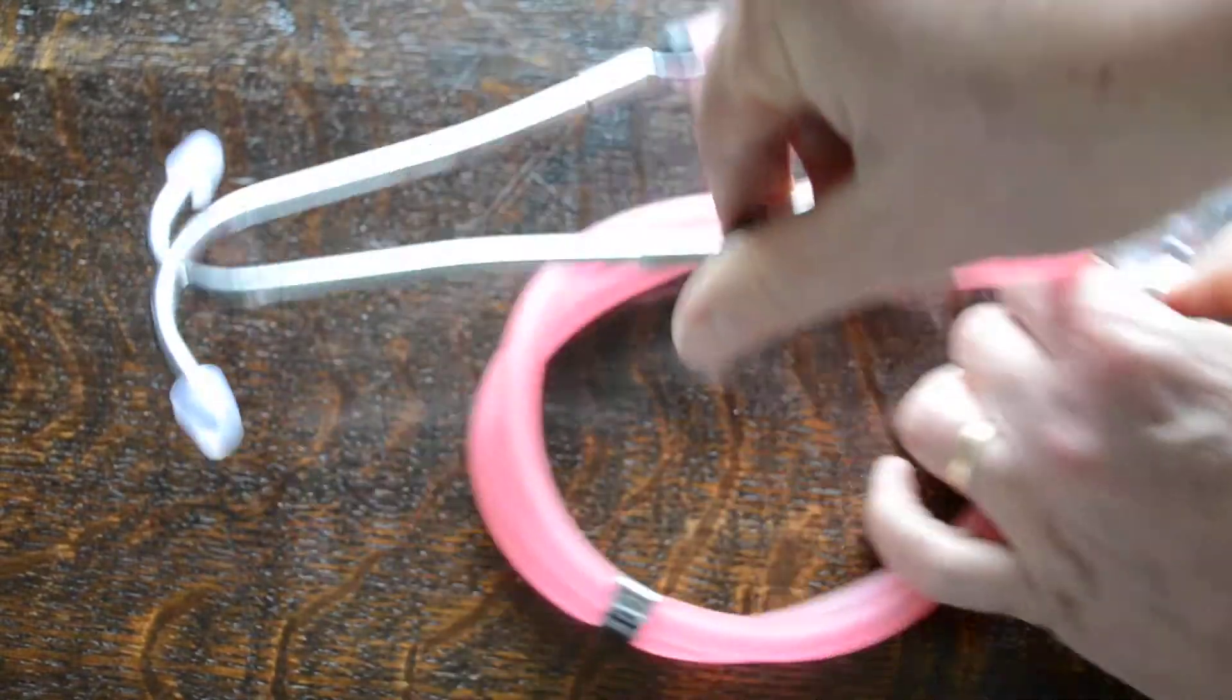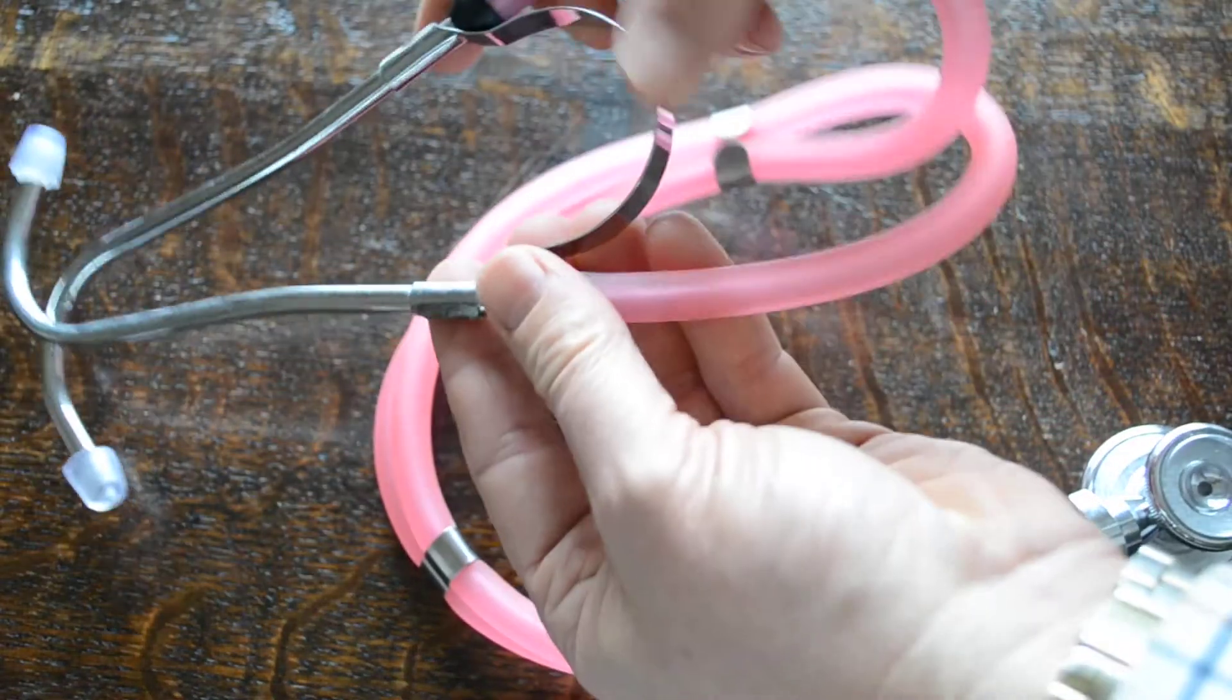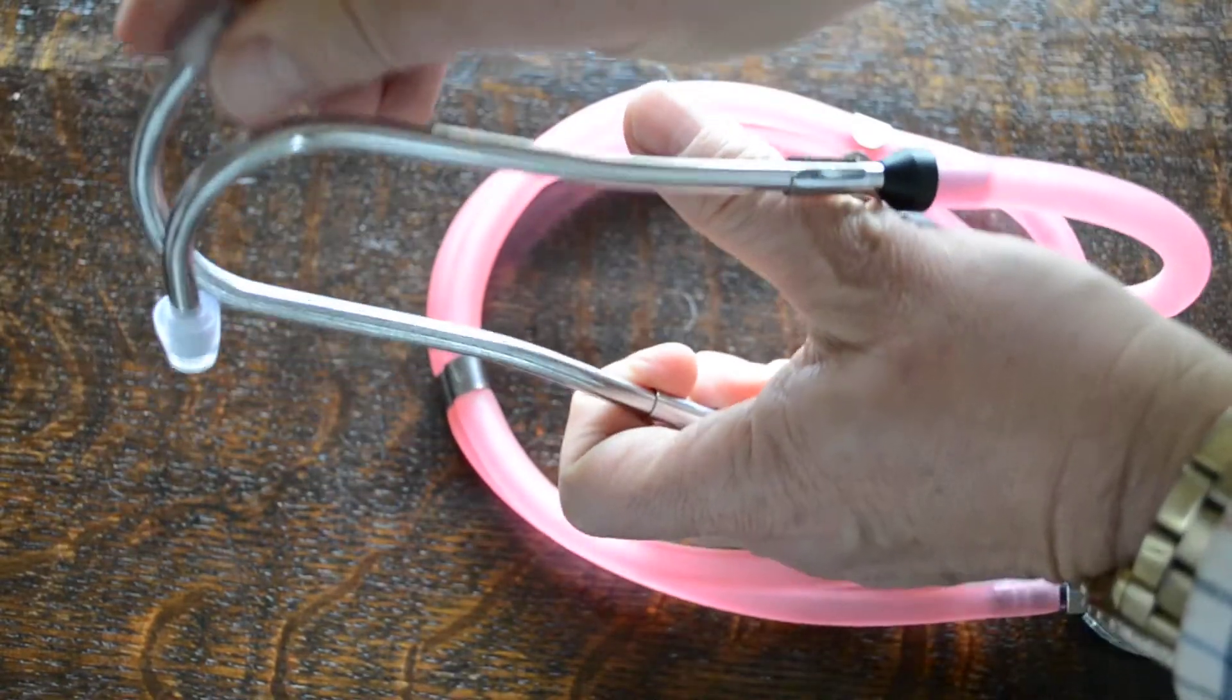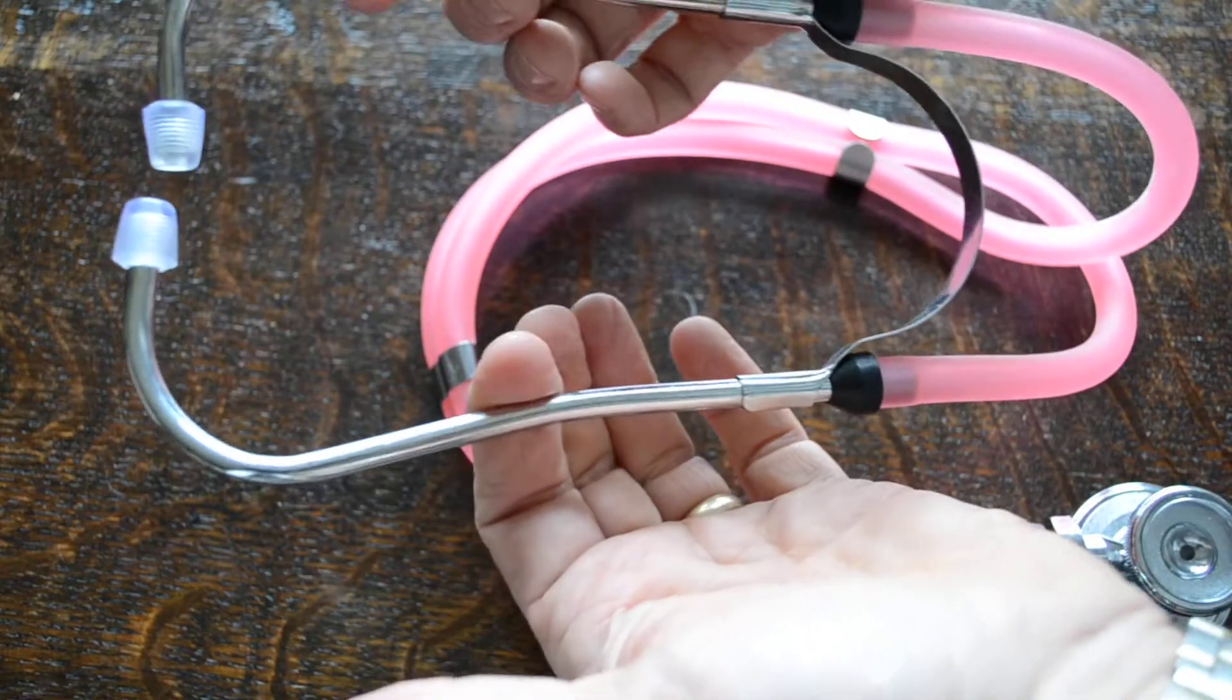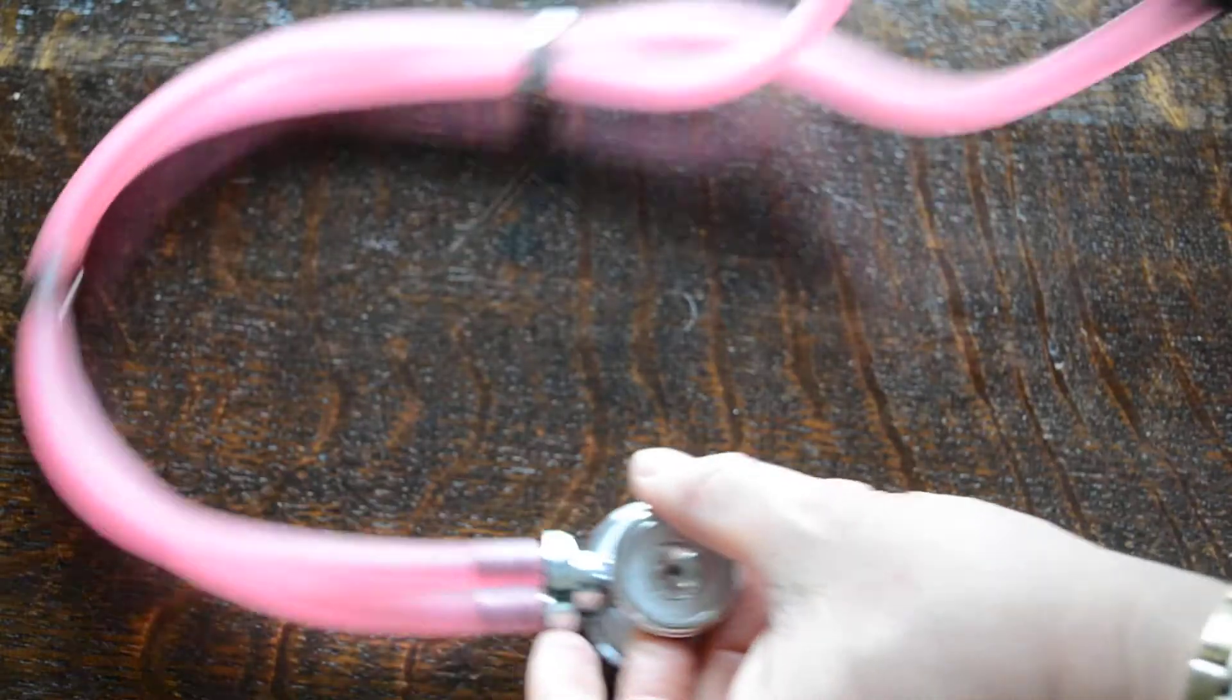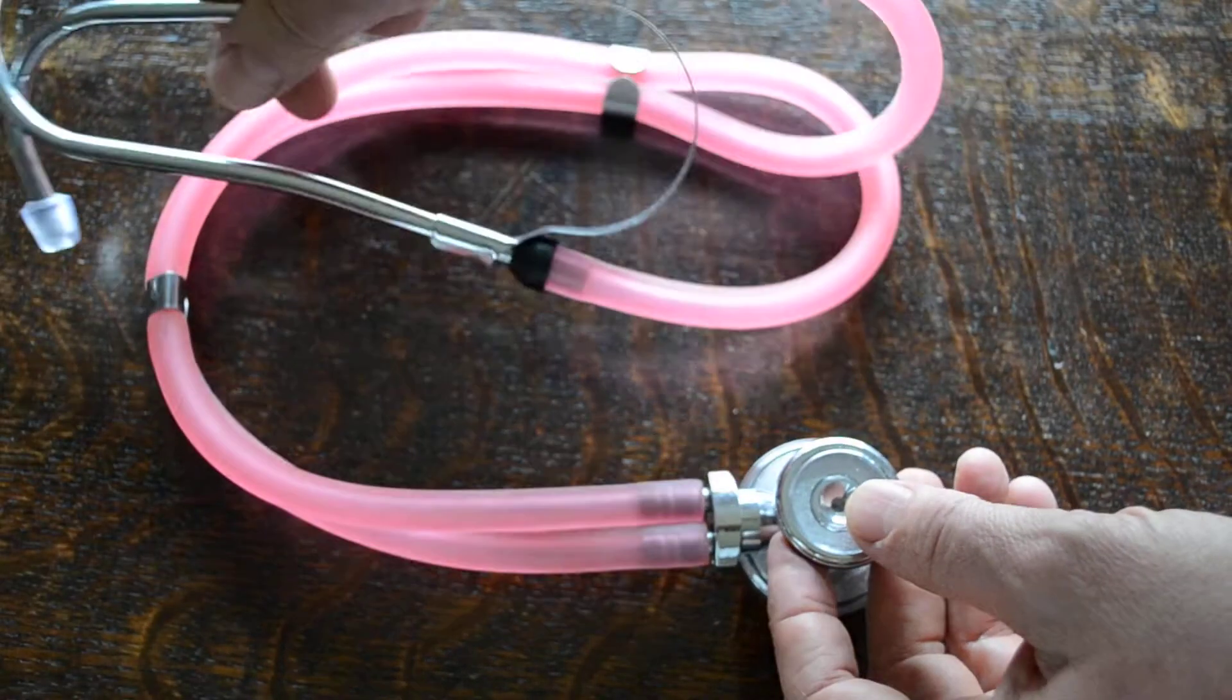The headset on this unit is a standard sprung piece, standard steel springing with a see-through soft graded ear tip. It's quite comfortable in use, not too strong. The springing on that 56 to 58 centimeters total length on the tubing, so it's a full-size tubing.